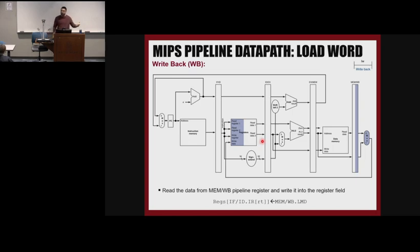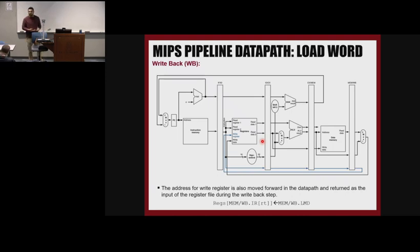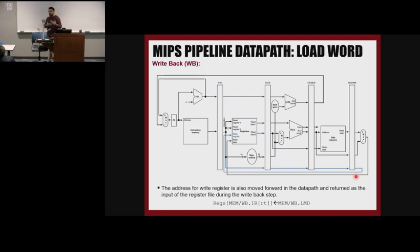It is three instructions after the instruction we're working on, which is the problem. The way to fix this is we send the destination address through the pipeline as well. We have pipeline registers, and the address is sent directly with the instruction through the pipeline. So when we want to write back to the register file, the address is the correct one for that instruction.